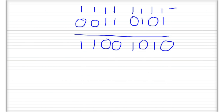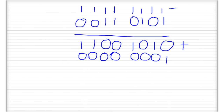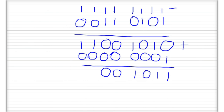To get the twos complement, all we need to do is add 1. If there's a carry beyond the number of digits in the register, we ignore it. Adding 1 to the ones complement result, and padding with zeros for a full byte: 0+1=1, 1+0=1, 0+0=0, 1+0=1, 0+0=0, 0+0=0, 1+0=1, 1+0=1 — giving us 11001011. That's the twos complement of 00110101.